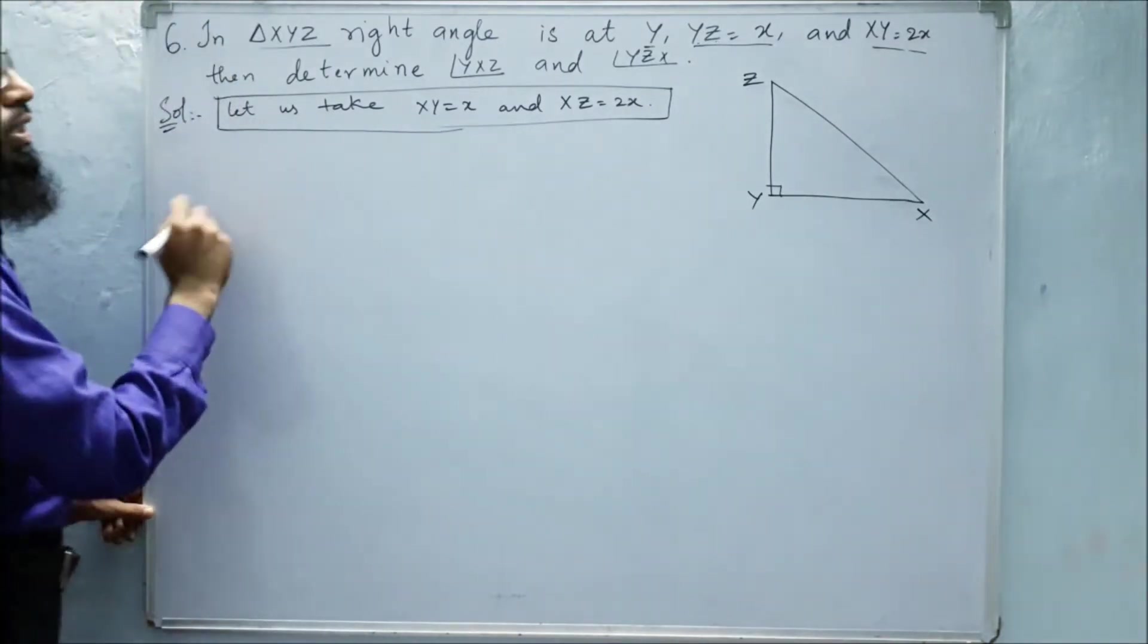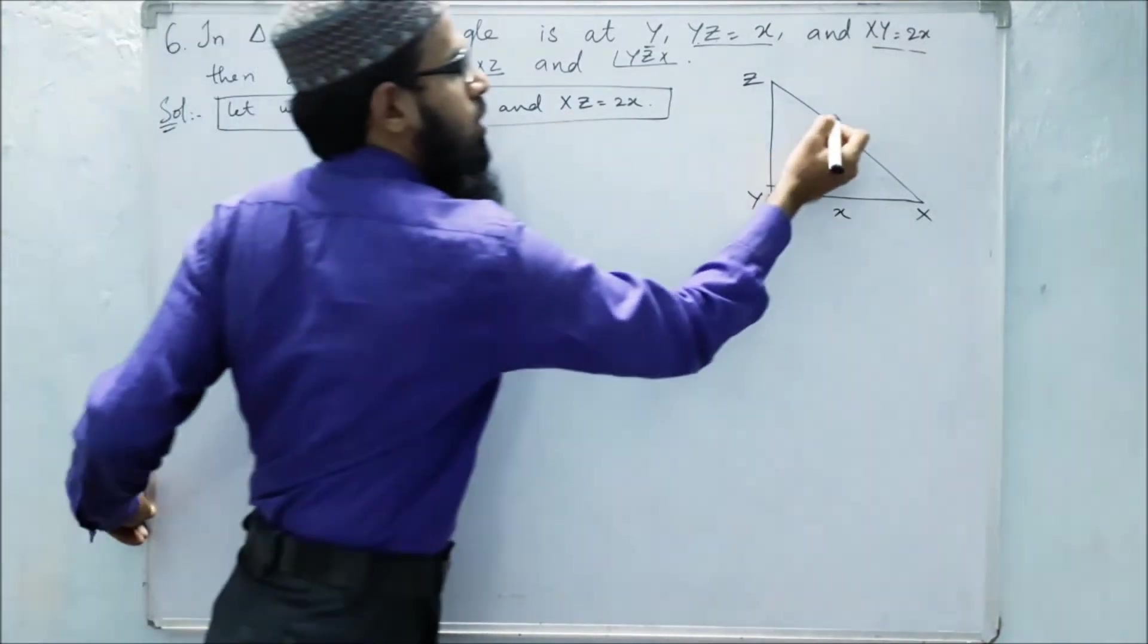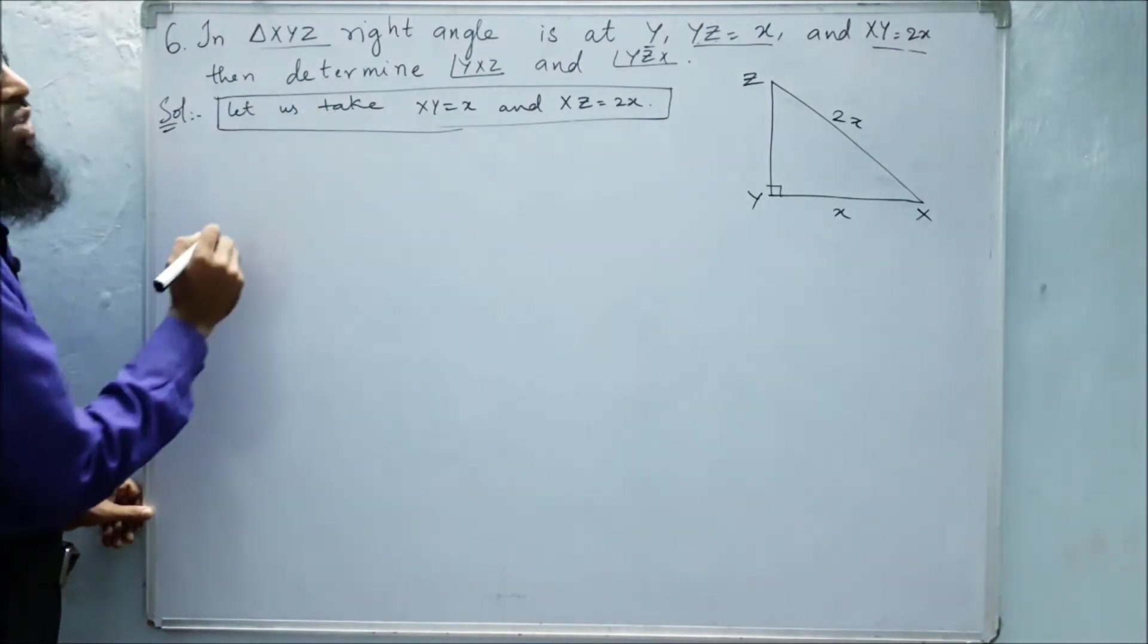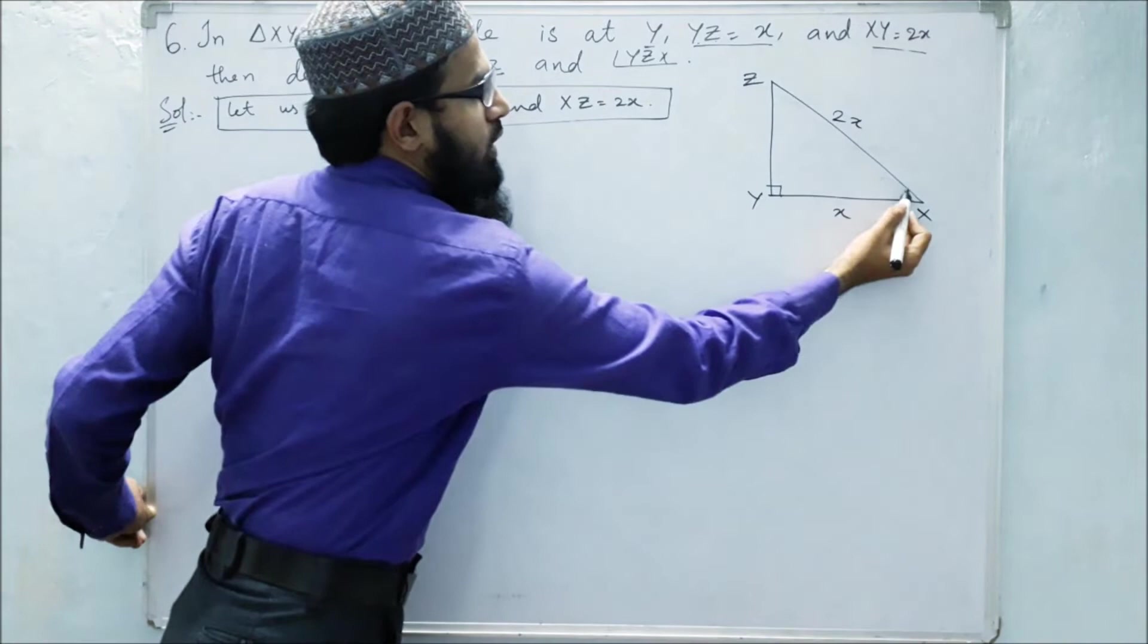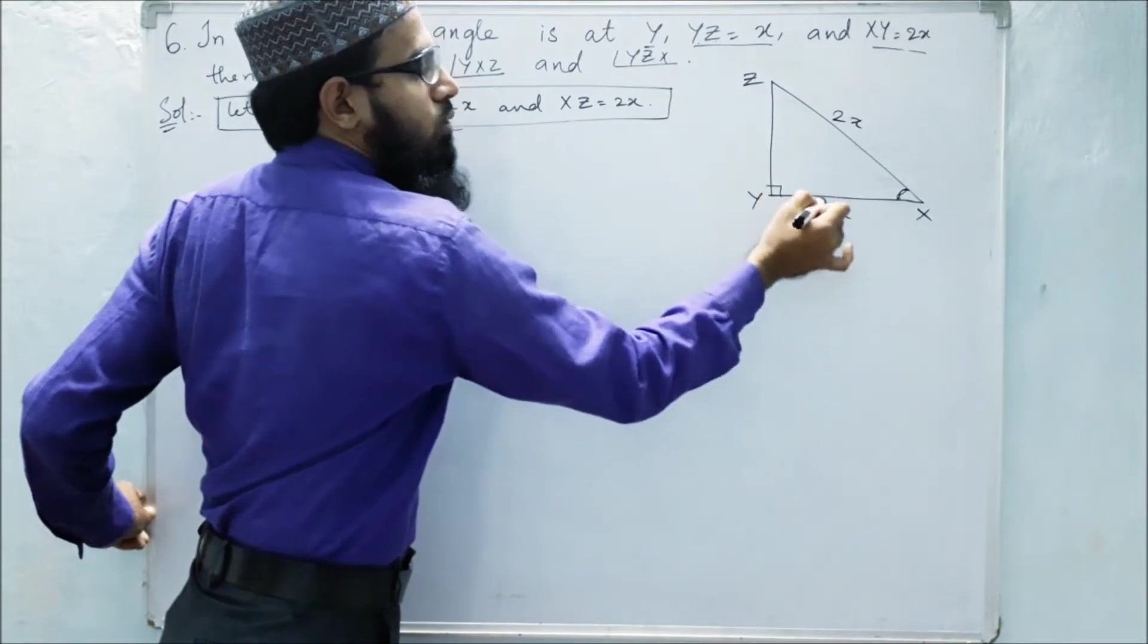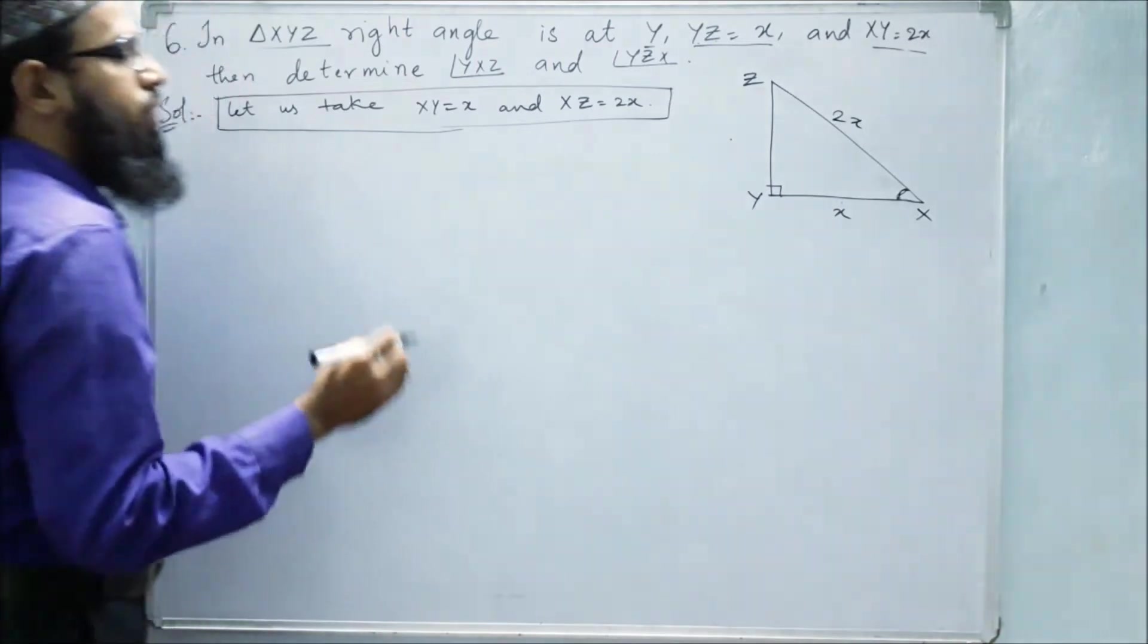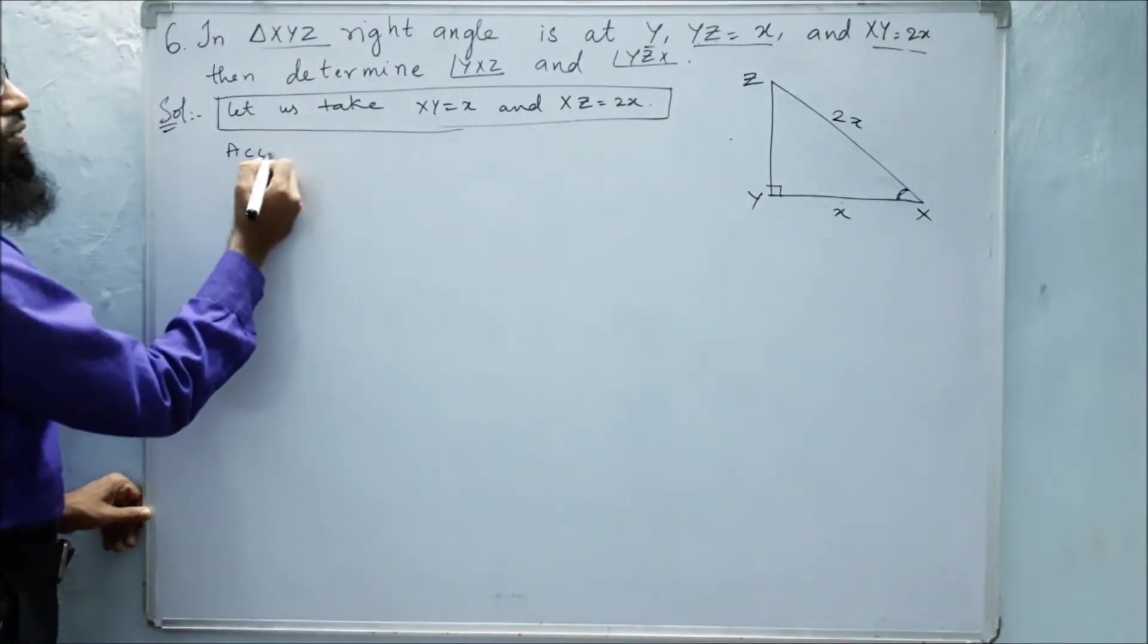Next, let us solve this. XY is x and XZ is 2x. Then next, for finding angle X, for finding this angle, we have to consider this and that, but we should know these three values: opposite, adjacent, and hypotenuse.